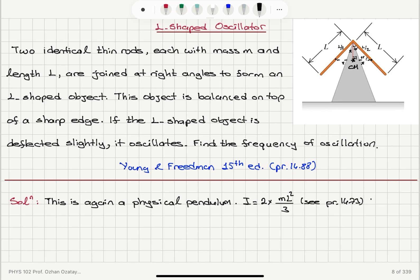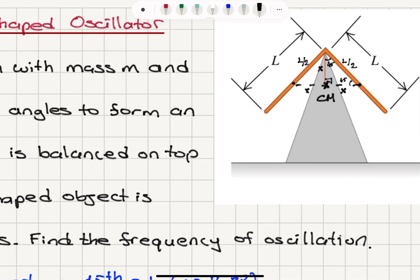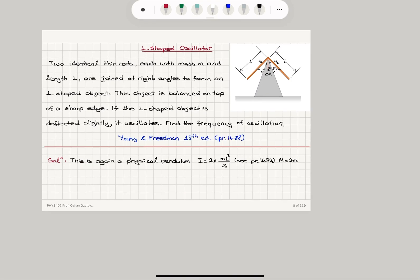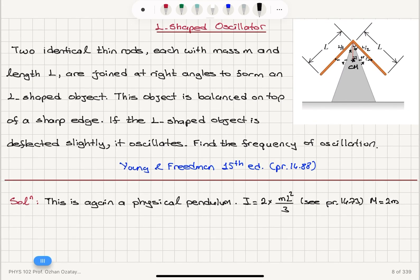The total mass of the two rods will be 2m, and the distance between the pivot point and the center of mass will be basically X here. So we can calculate what X is using this isosceles right triangle. X square plus X square is equal to hypotenuse square, which is L square over 4. So we can see that X square will be L square divided by 8.